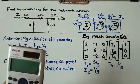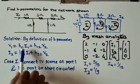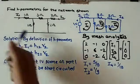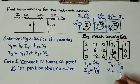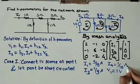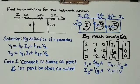Now we compute h11 and h21. We have v1 equals 1 volt. So h11 equals v1 over i1 with v2 equals 0 (port 2 short-circuited), giving h11 equals 1 divided by 5/9, which equals 9/5 ohms.